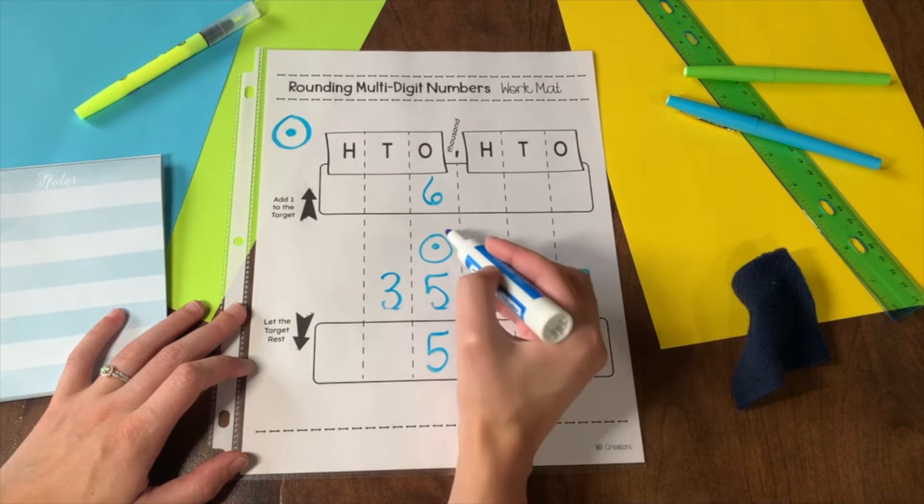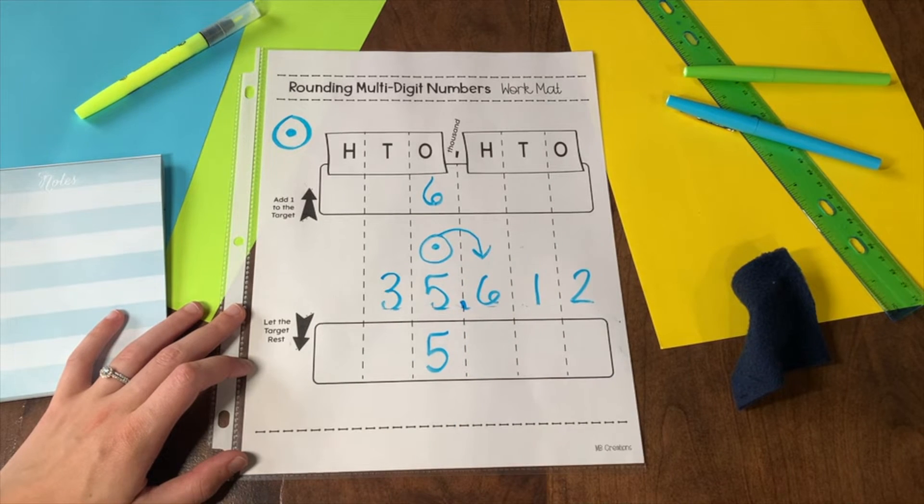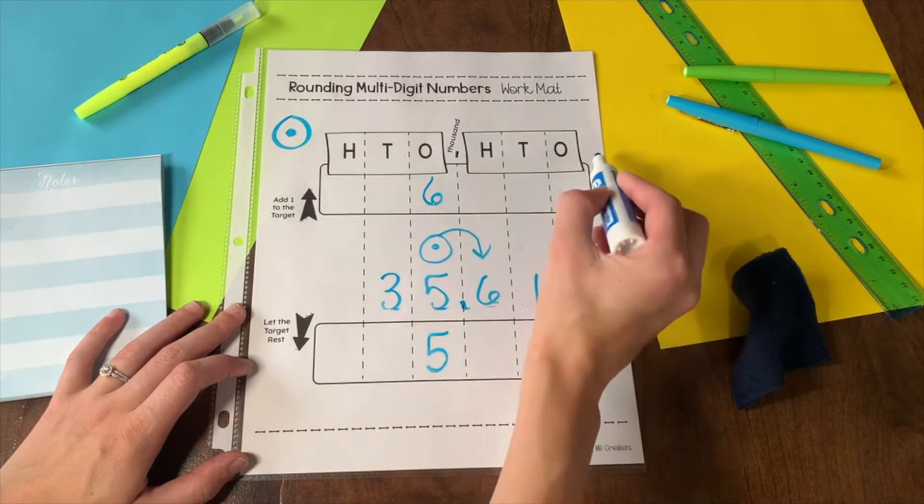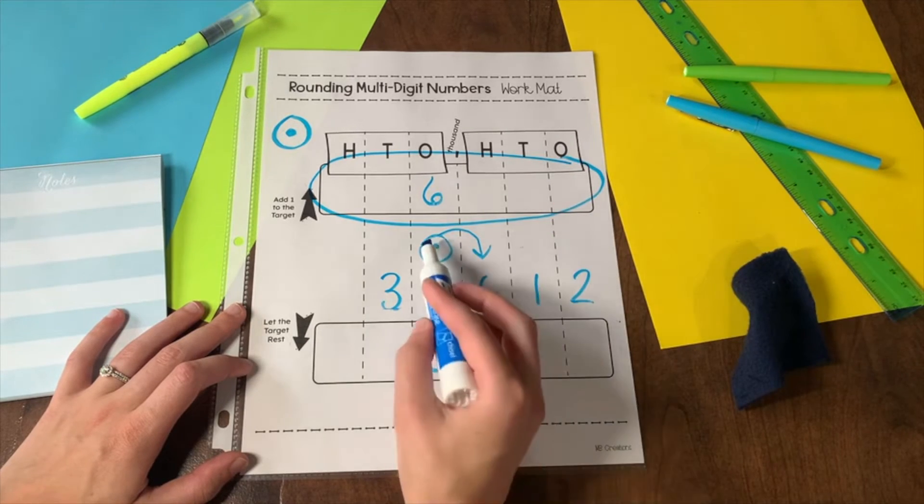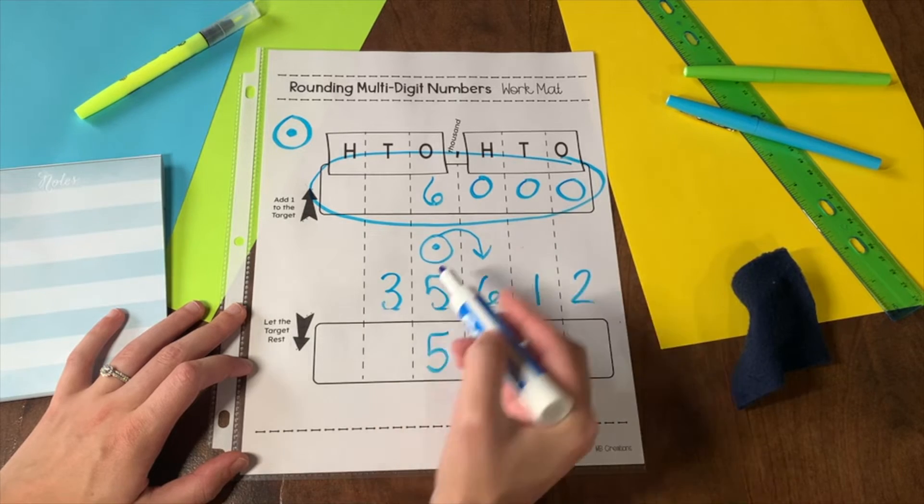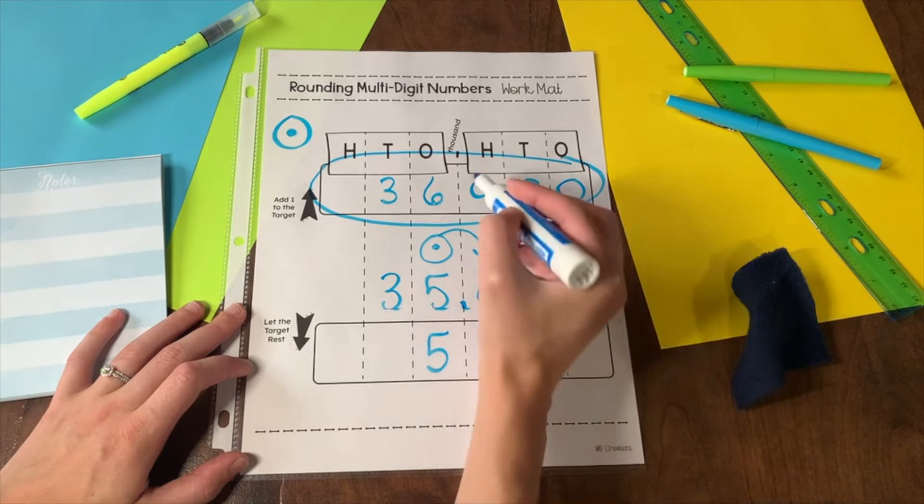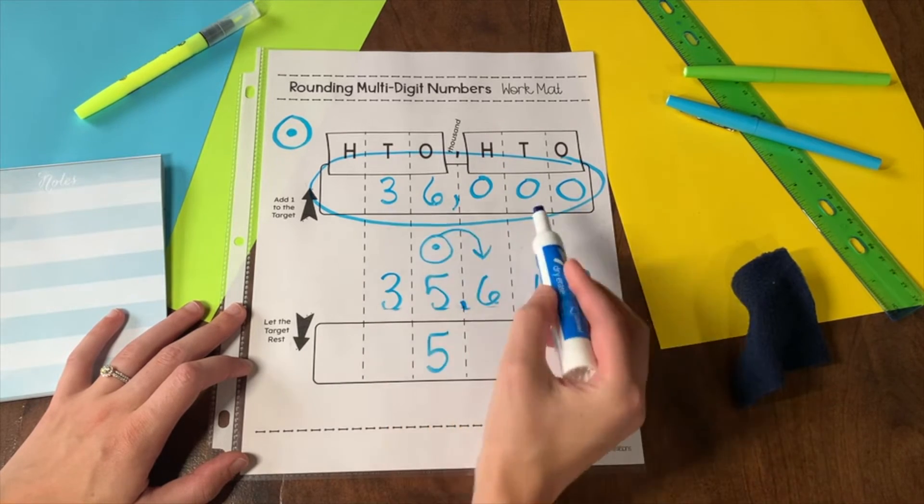To figure that out, I have to look back at the number before, which is a 6. A 6 causes my target to round up. So this will be my final answer. Everything behind my target becomes a zero and everything in front of my target stays the same. 35,612 rounded to the nearest thousand is 36,000.